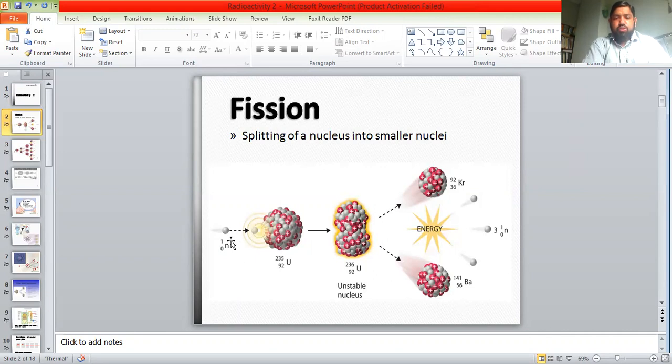Now you can see one neutron was required to start the reaction but now we have three neutrons released. These three neutrons will further activate three more nuclei, and those three nuclei will further activate nine more nuclei, and so on. This is known as a chain reaction.